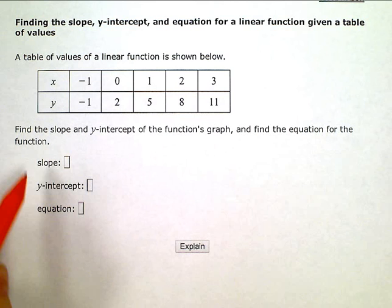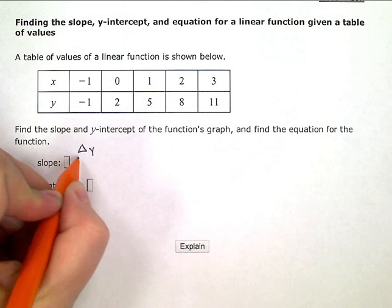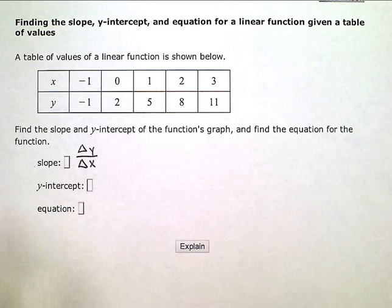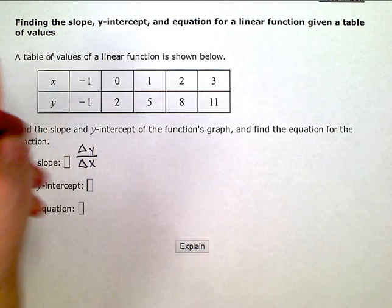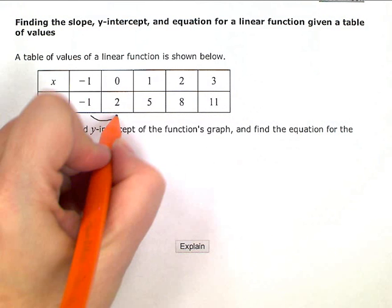So let's start with slope. Slope is the change in y over the change in x. So I need to look here at my table and figure out how is y changing and see what is the pattern here.